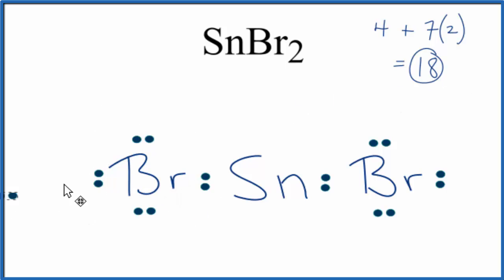We're going to take our last pair and put it on the tin, and this will be the Lewis structure for tin(II) bromide.